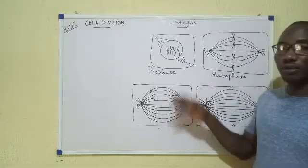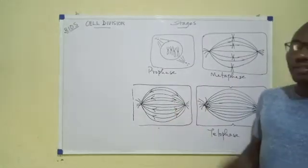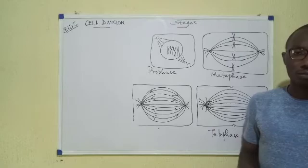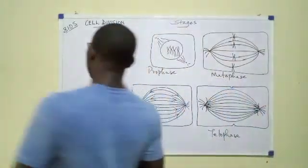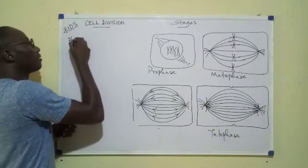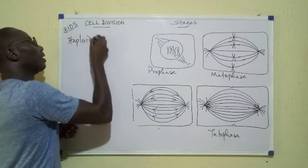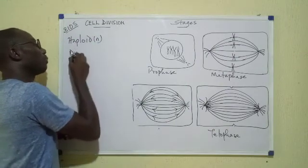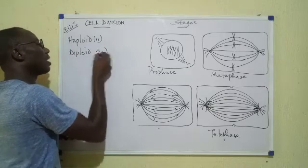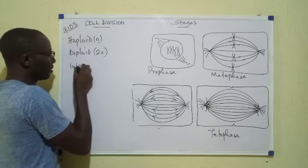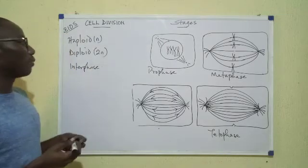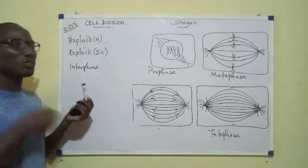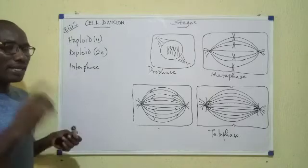Having heard about the four stages, there are three terms I would like us to describe briefly. They are haploid (n), diploid (2n), and interphase. Haploid, diploid - if you check their symbols, diploid means two of the haploid.